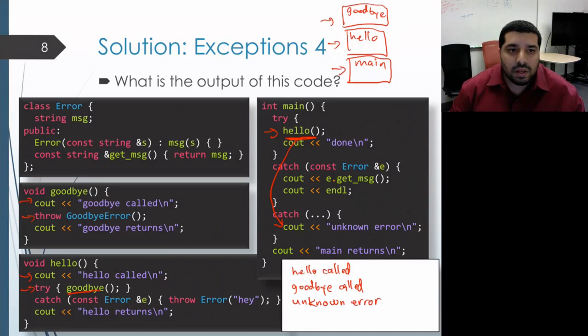And then once that catch block is done, execution proceeds past the try catch and it prints out main returns. And our program ends.